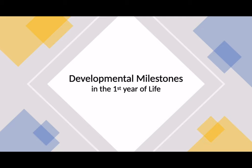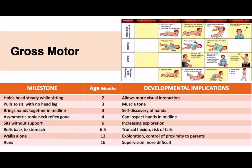Reviewing developmental milestones in the first year of life across gross motor, fine motor, language, and social skills: for gross motor, at two months the baby can hold the head steady while sitting; at three months, pull to sit with no head lag and bring hands together in the midline; at four months, disappearance of the asymmetric tonic neck reflex; at six months, sit without support and roll from back to stomach; and at twelve months, they can usually walk alone.